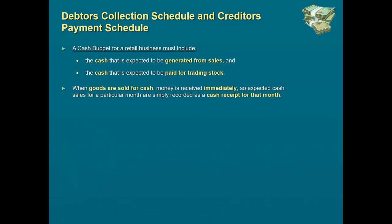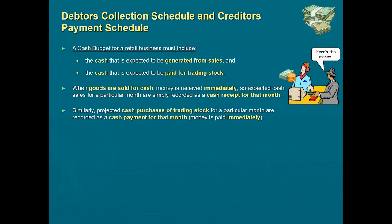When goods are sold for cash, money is received immediately, so expected cash sales for a particular month are simply recorded as a cash receipt for that month. Similarly, projected cash purchases of trading stock for a particular month are recorded as a cash payment for that month. When dealing with credit sales and credit purchases, the process becomes a bit more complicated.